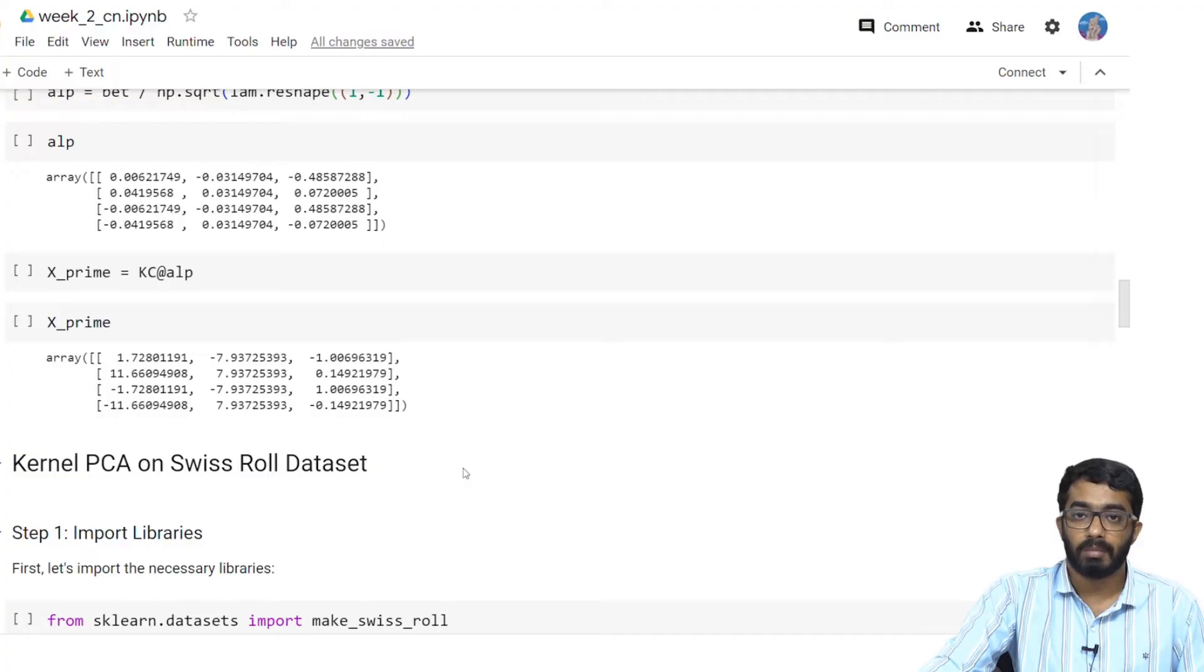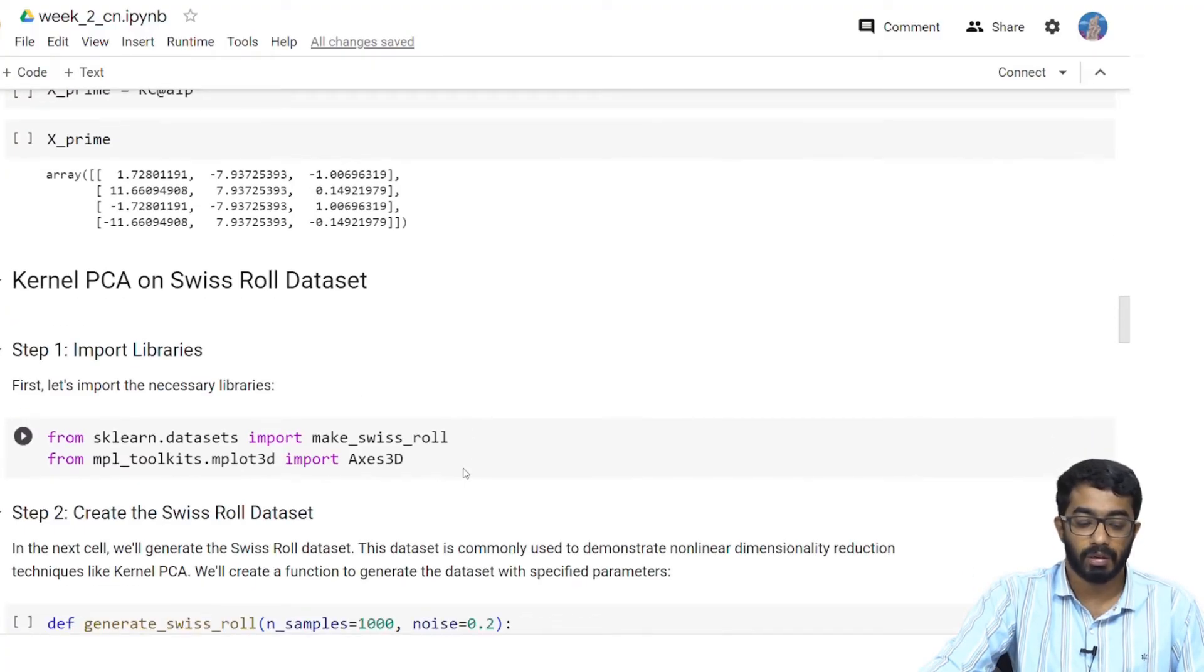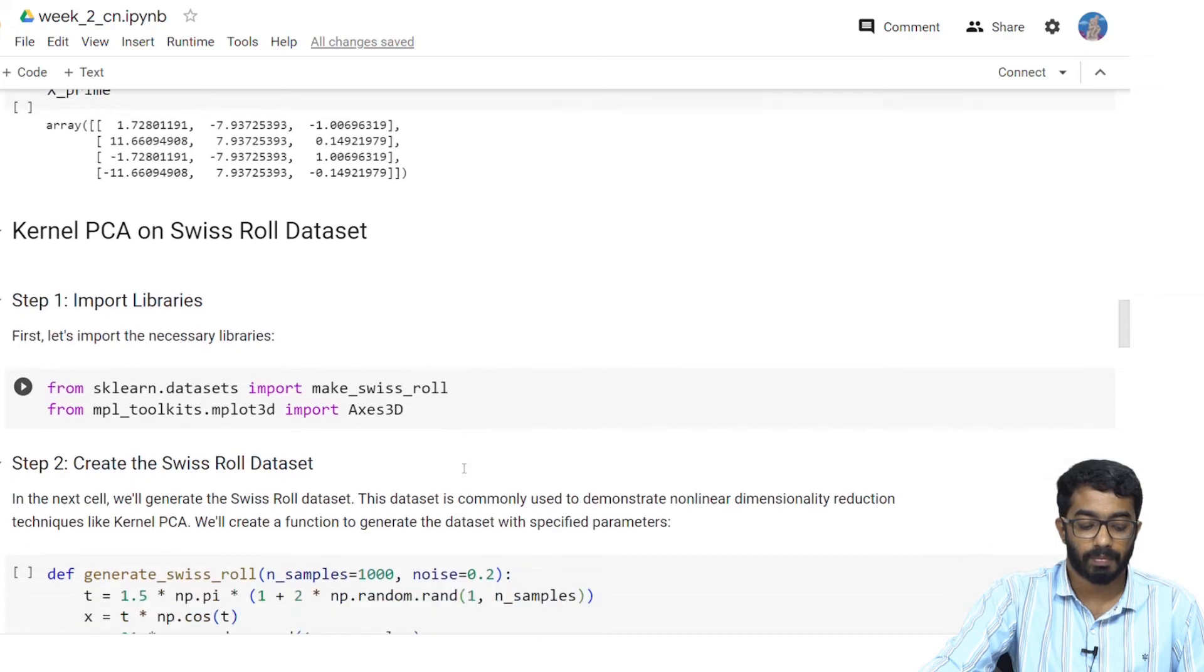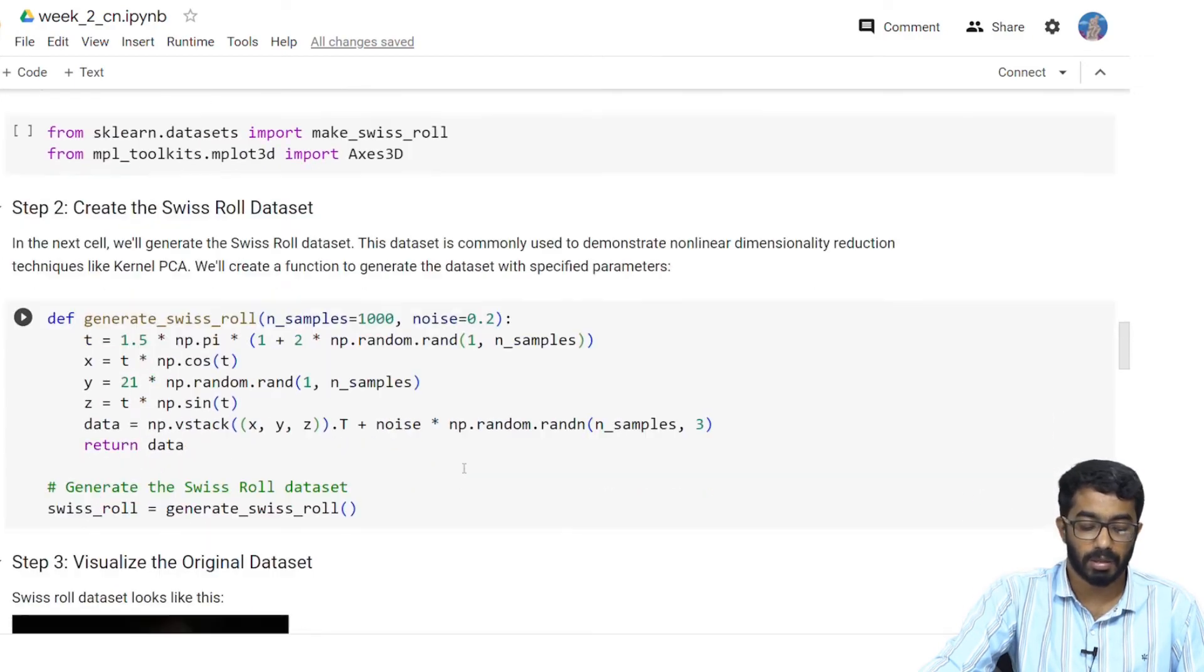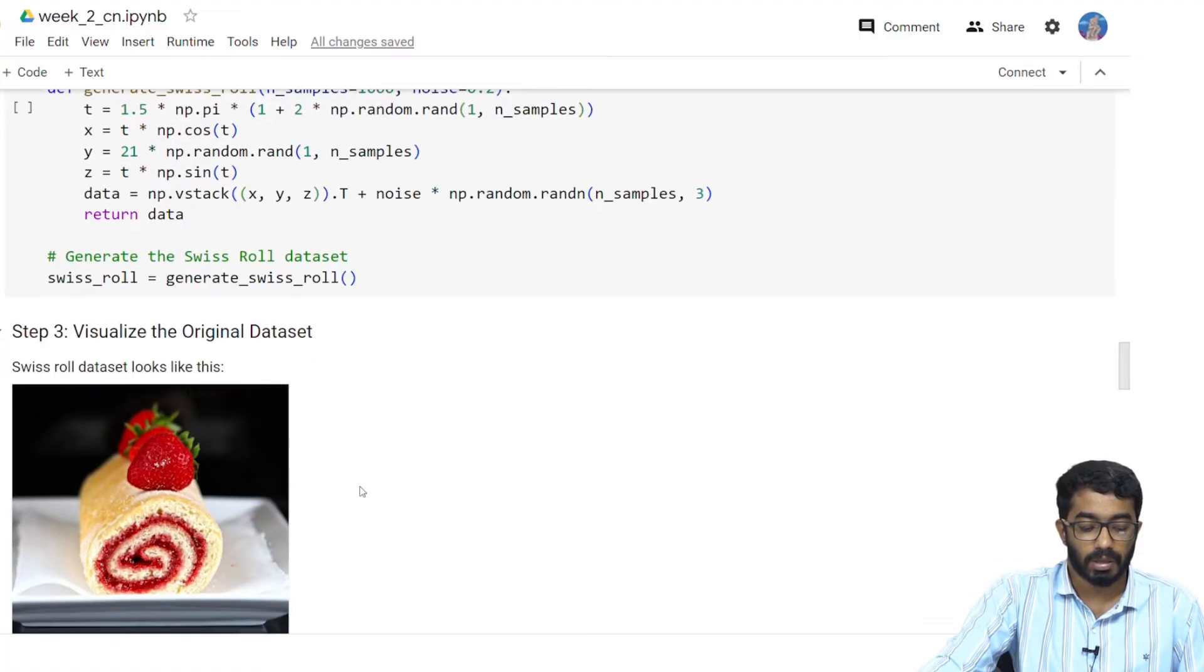Now let us try to apply kernel PCA on a real world data set. The data set which we will focus here is the Swiss roll data set. First let us import the necessary libraries from sklearn.datasets import make_swiss_roll gives us the ability to make the Swiss roll data set. Let us first create the Swiss roll data set. We create the Swiss roll data set using the generate Swiss roll function and let us try to visualize this data set.